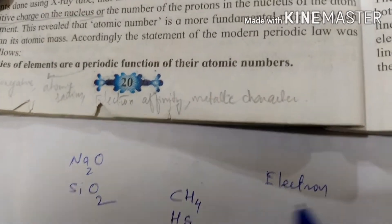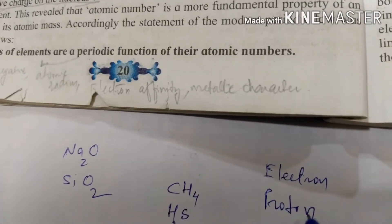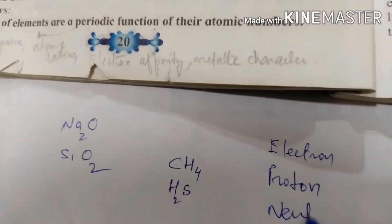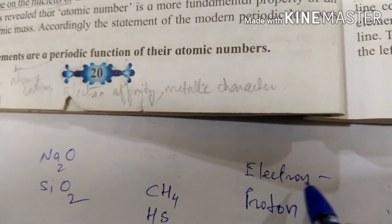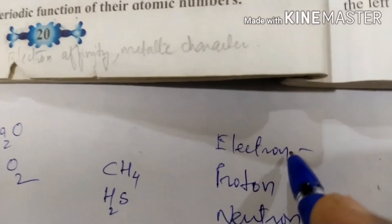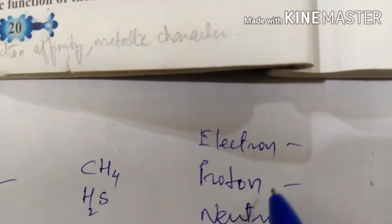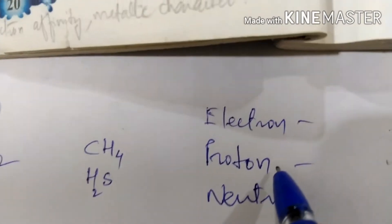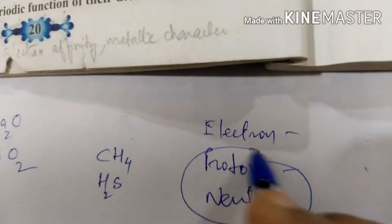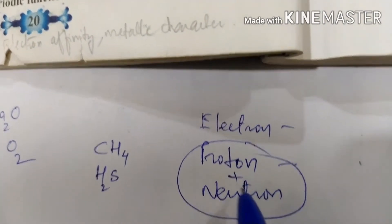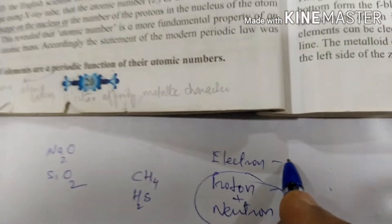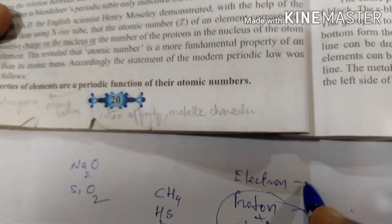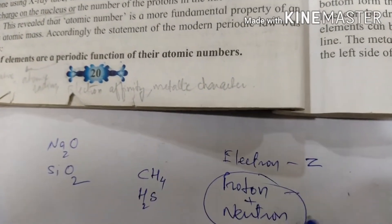In an atom, there are electrons, protons, and neutrons. The number of electrons is always equal to the number of protons. Protons plus neutrons give the atomic mass number, denoted by A. The number of electrons equals the atomic number, denoted by Z.